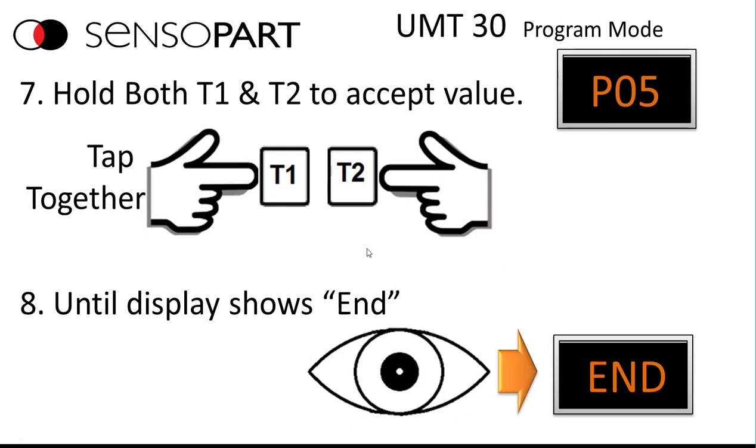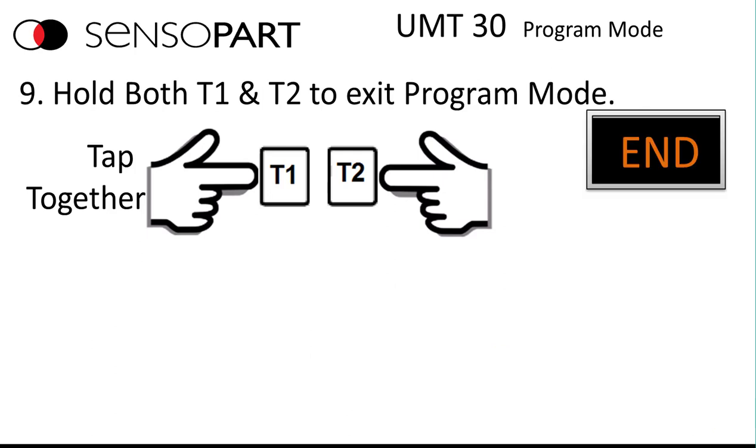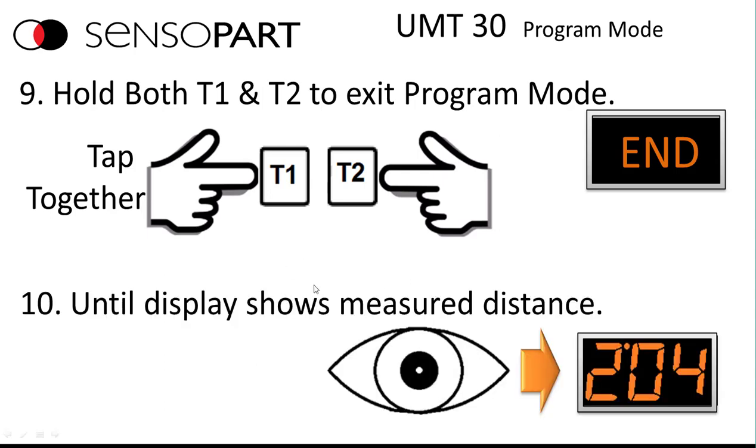And all other advanced configurations are taught the same way. So to exit program mode tap T1 and T2 together a second time. And then when the display shows the measured distance you know you're back in run mode.